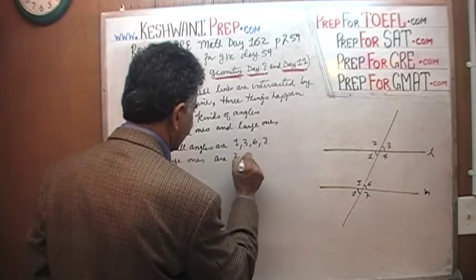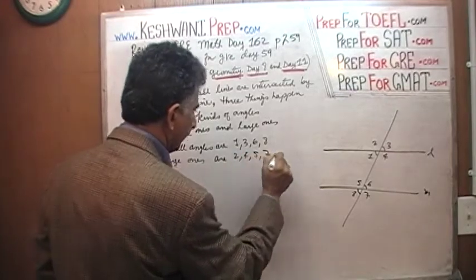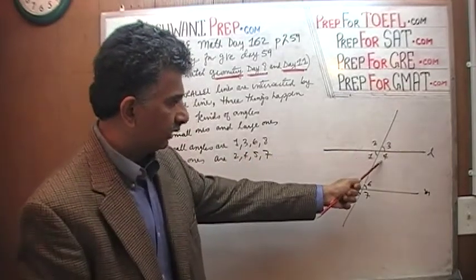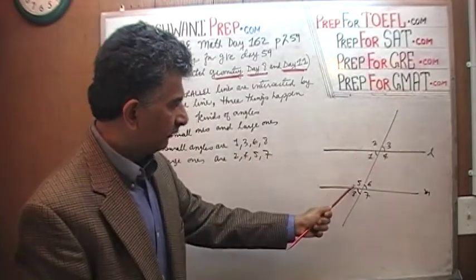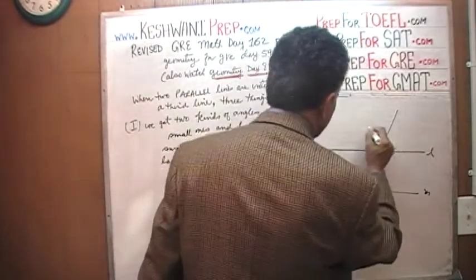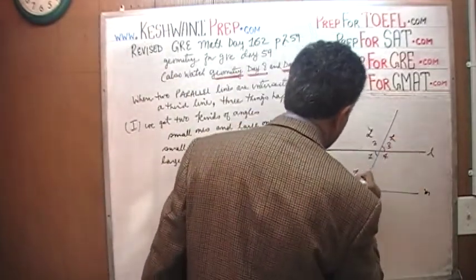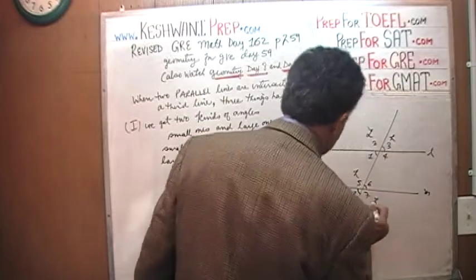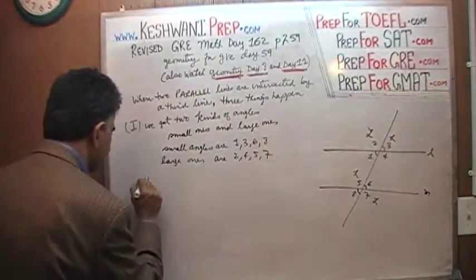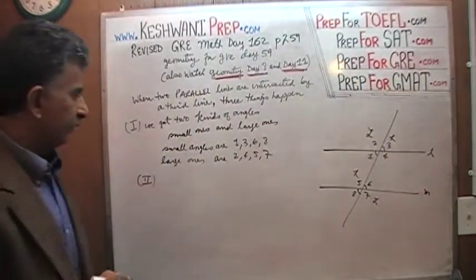Angles 2, 4, 5, and 7 are all large angles. So we get two kinds of angles: small ones and large ones. Number two: the sum of any small angle and any large angle equals 180 degrees.